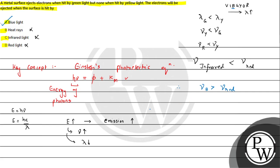Let's look at the electromagnetic spectrum. We have radio waves, then microwave, then infrared rays, then the visible region, then UV rays and X-rays. As we go from radio waves toward X-rays, frequency increases and wavelength decreases.